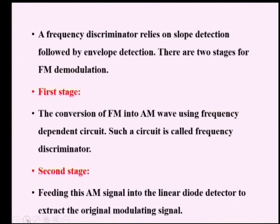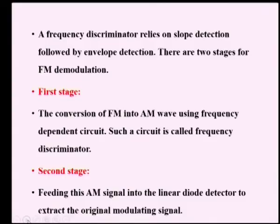The first stage is converting the frequency modulated signal into amplitude variation using a frequency dependent circuit. In frequency modulation, the message signal amplitude is used to vary the carrier frequency — the carrier frequency is shifted within the range Fc plus ΔF and Fc minus ΔF in accordance with the message signal. In the reverse process, this frequency deviation has to be reconverted into amplitude variation, which is done first using the frequency discriminator.